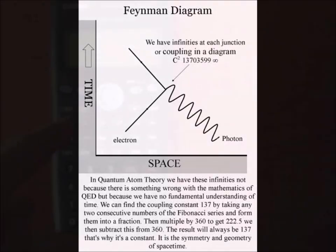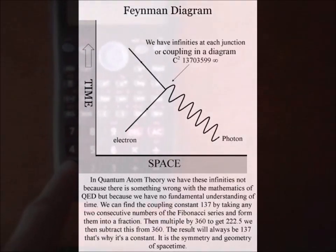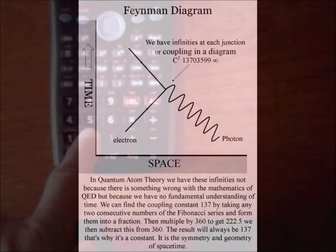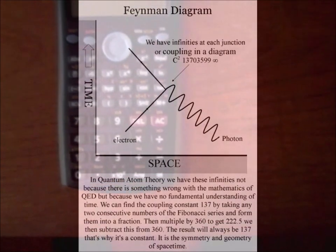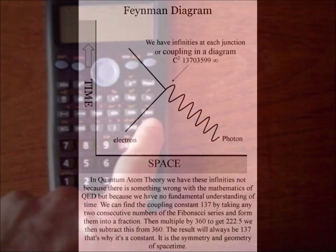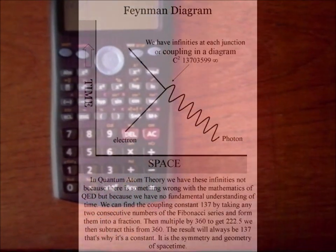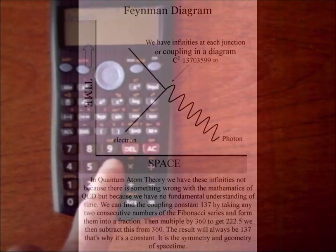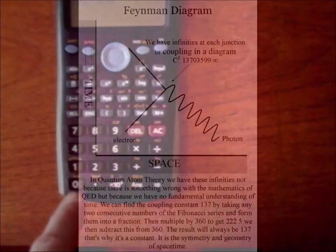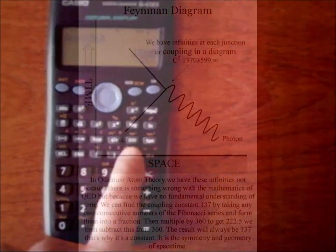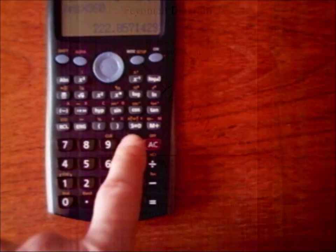This theory predicts that the fine structure constant is a geometrical constant in the physical process that forms the dynamic geometry of space-time. It is the size it is because if you take any two consecutive numbers of the Fibonacci series greater than the number 8 and form them into a fraction, if you then multiply by 360 to get 222 and then subtract this from 360, the result will always be 137. It is a constant in the dynamic geometry of space-time.